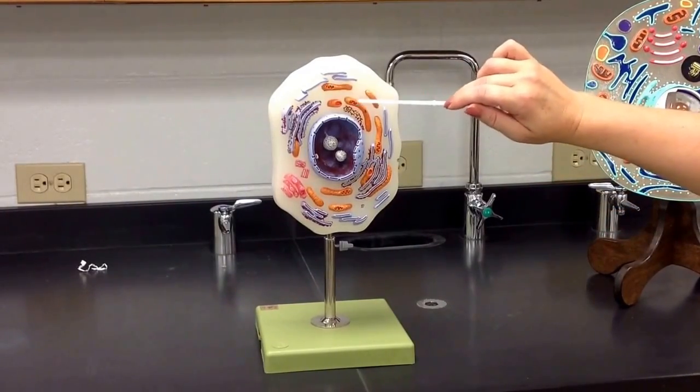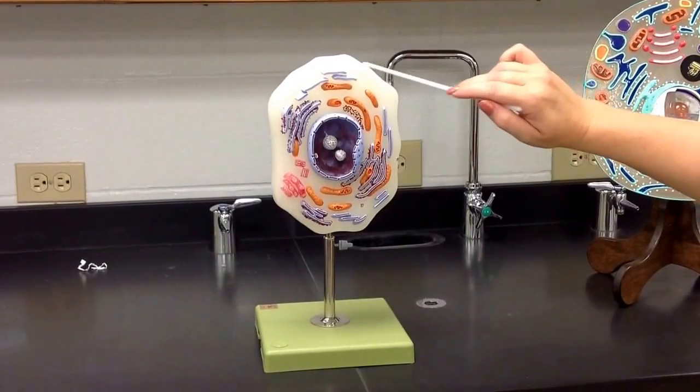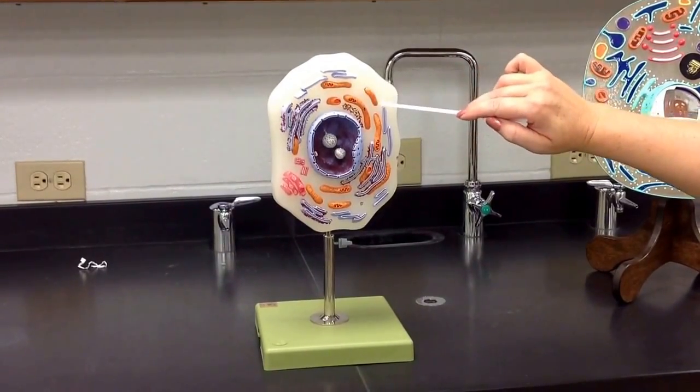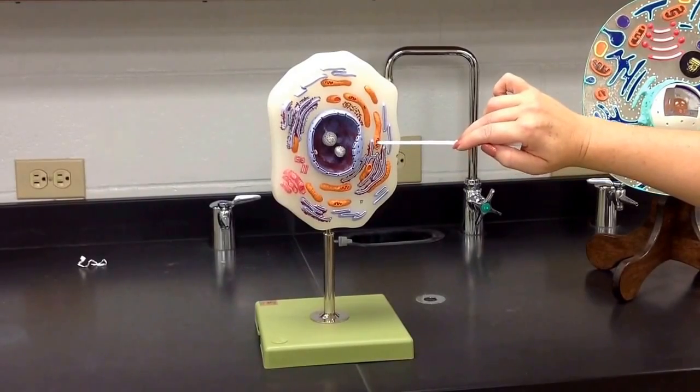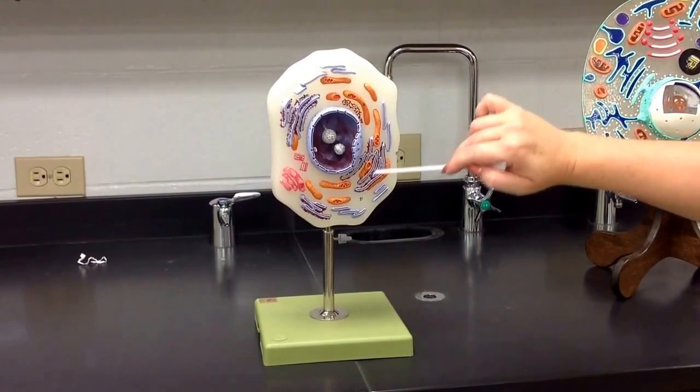Your mitochondria, which look a little bit different from one model to the next, but you will always see this folded membrane on the inside. It's always smoother on the outside and folded like little jack-o-lantern teeth on the inside. So that's your mitochondria.